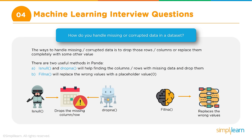When removal isn't feasible, you fill the missing values with meaningful values. For example, you might take the mean value for a particular column and fill all missing entries with that mean. Alternatively, filling with minimum, maximum, or zero may be appropriate depending on the situation. There are many possibilities, so the best answer is to discuss and illustrate from experience.